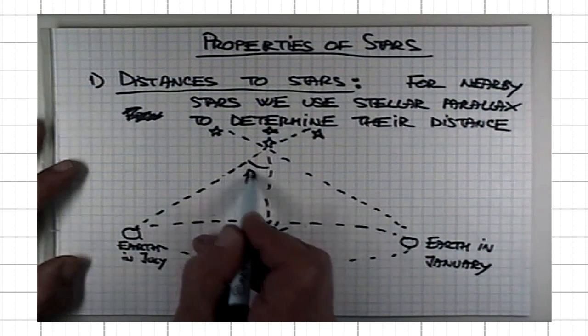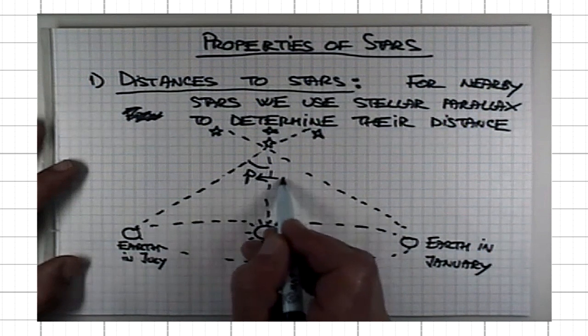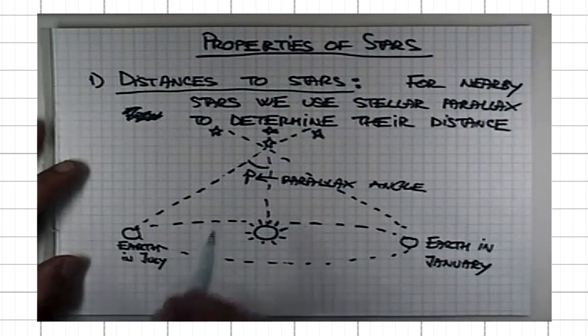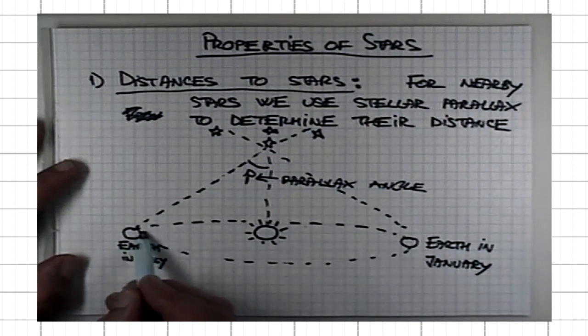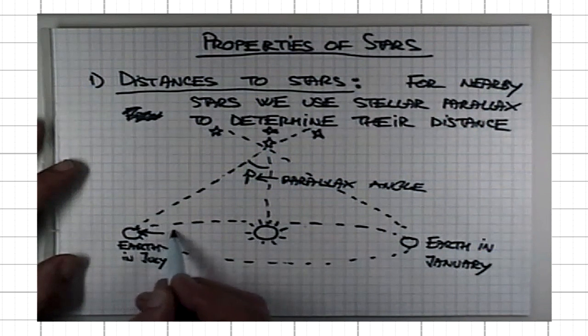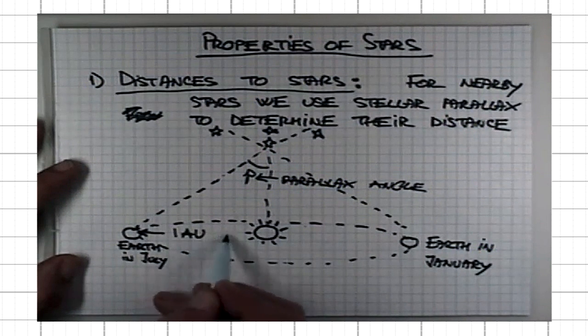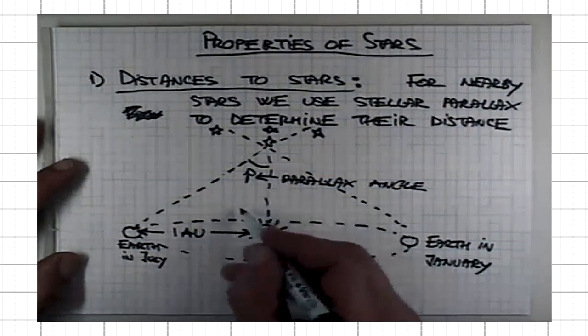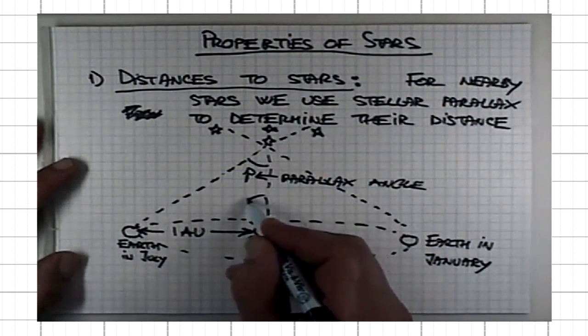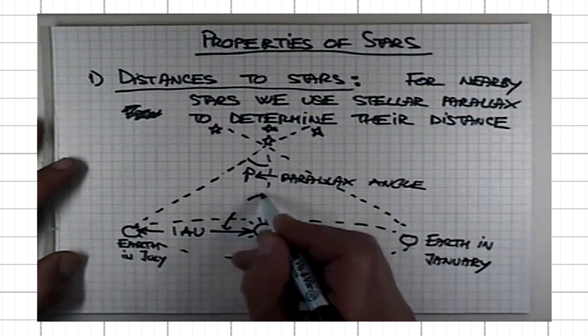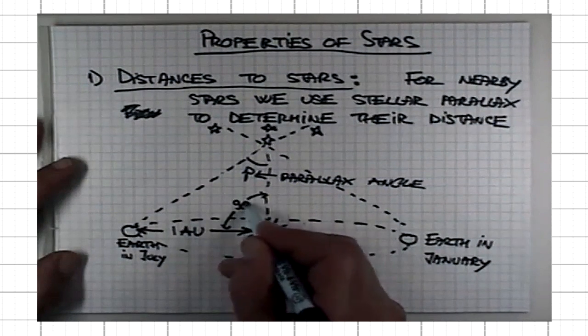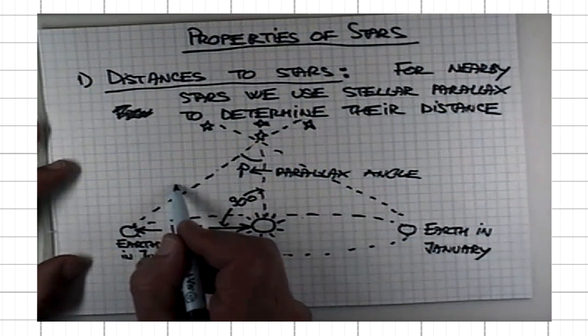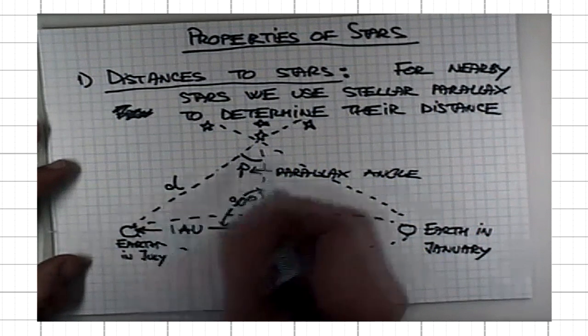This angle here, P, is known as parallax angle. If one can measure it, and one knows our distance from the Sun, one astronomical unit, and this angle here is right angle triangle, that's the key, then one can use geometry to determine the distance d to the star.